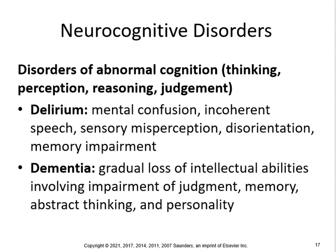Disorders of abnormal cognitive thinking, perception, reasoning, and judgment include delirium — mental confusion, incoherent speech, sensory misperception, disorientation, and memory impairments — and dementia, which is a gradual loss of intellectual abilities involving impairment of judgment, memory, abstract thinking, and personality. Delirium caused by alcohol withdrawal is called delirium tremens. Dementia is usually due to Alzheimer's but can also result from strokes, infections, traumas, tumors, Parkinson's, and Huntington's diseases.